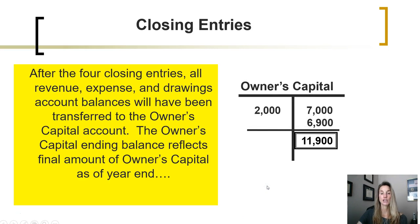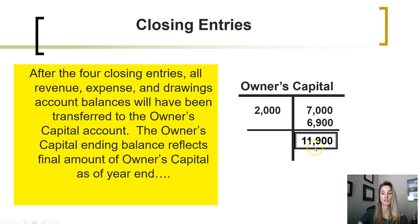After the four closing entries that closed out the revenue, expense, and drawing account balances have been transferred to owner's capital, the owner's capital balance will reflect increases to it from the amount of net income for the period, less any decreases as a result of the amount the owners withdrew during the period, leaving us with an ending balance in owner's capital.